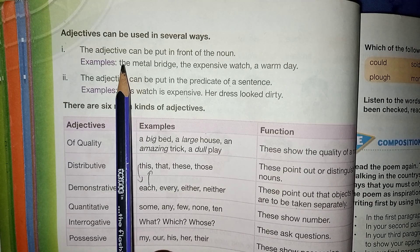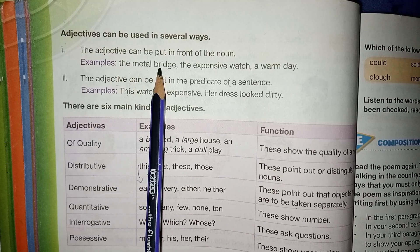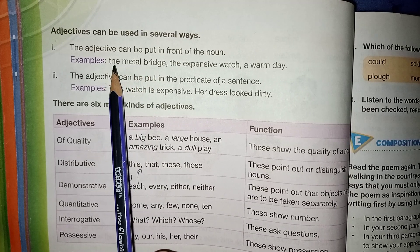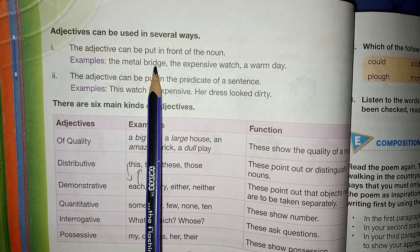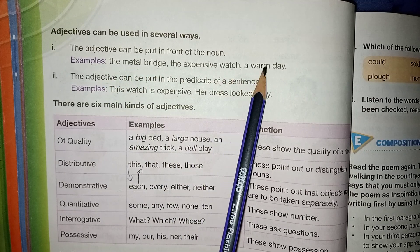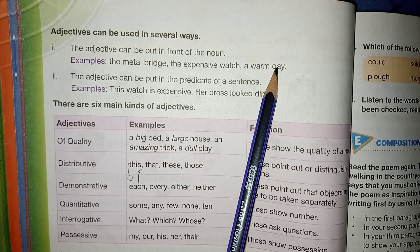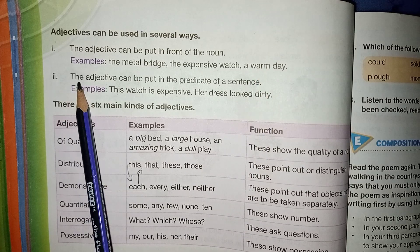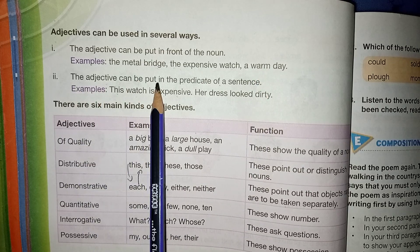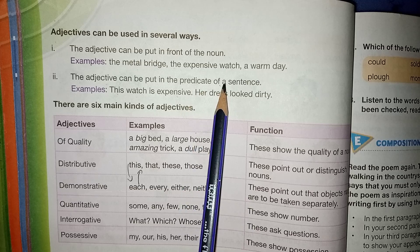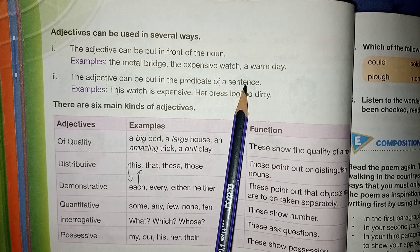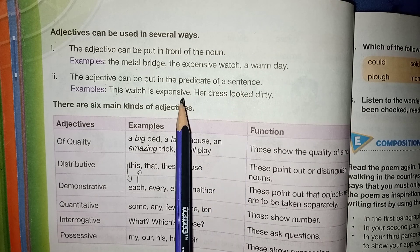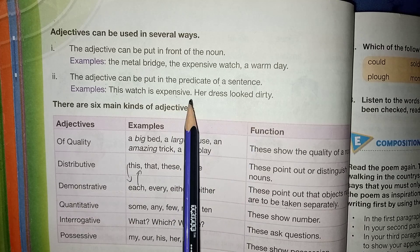Attributive adjectives میں adjective کی quality جو use کرنی ہے وہ ہمیں پہلے سے پتا ہوتی ہے۔ For example: the metal bridge, the expensive watch, a warm day۔ Number two: the adjective can be put in the predicate of a sentence - predicative adjectives وہ ہوتے ہیں جو noun کے end پہ use ہو رہے ہوتے ہیں جس noun کو وہ describe کر رہے ہیں۔